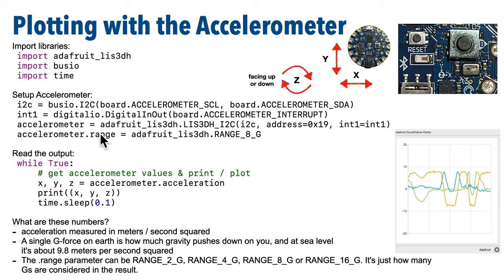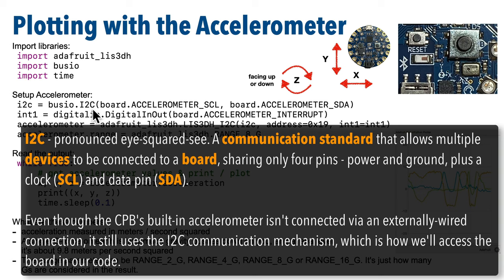These four lines of code are what we need to set up and configure the accelerometer on a Circuit Playground, either Bluefruit or Express. Just like our previous setup code, if you consider this like a software Lego, you can just reuse these four lines whenever you need to work with the accelerometer. The first line refers to I2C, which is often pronounced as I-squared-C — that's the inter-integrated circuit protocol.